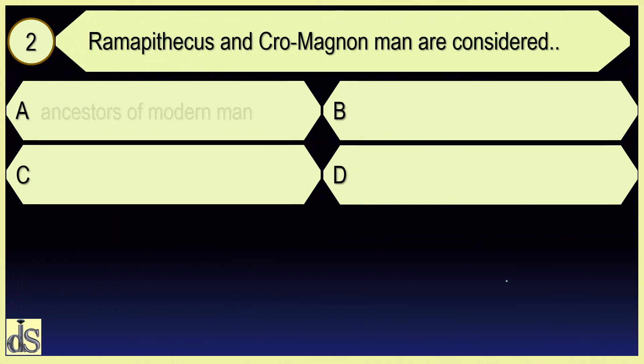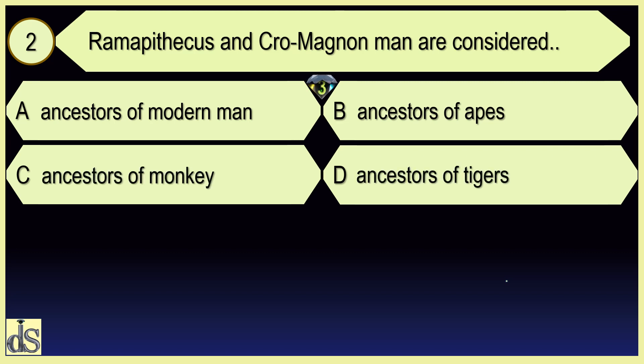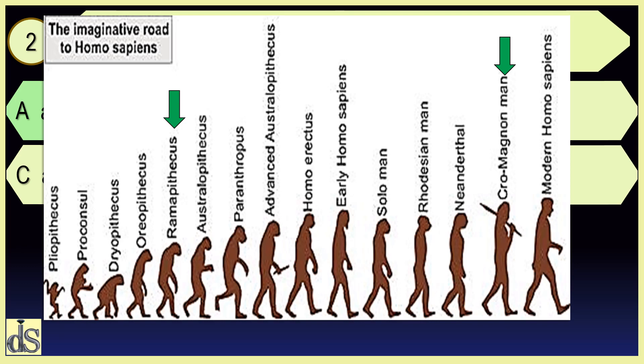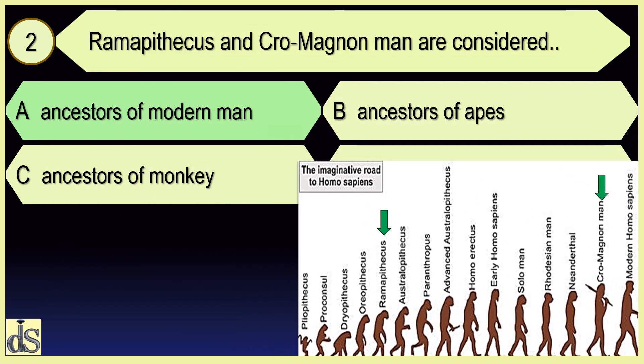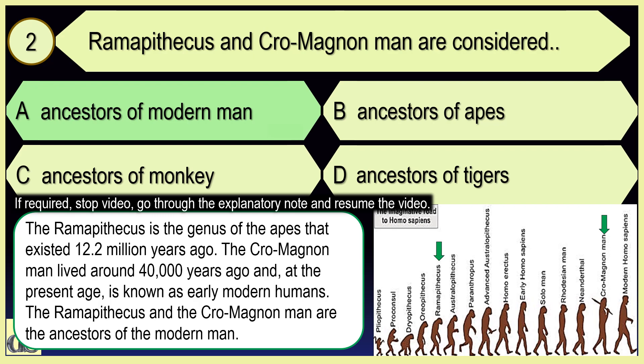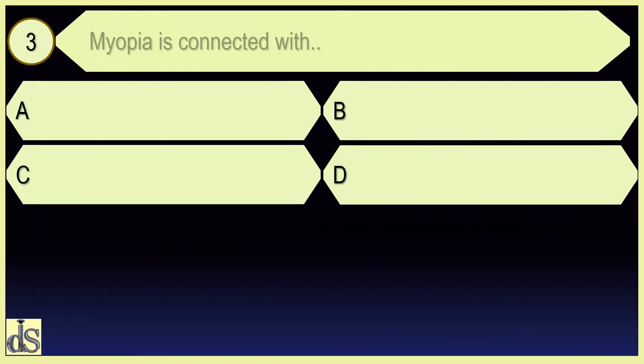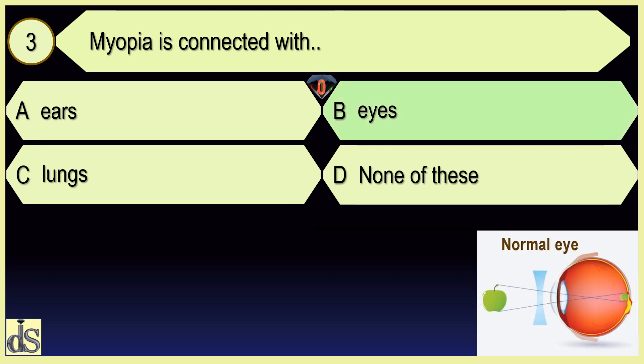Ramapithecus and Cro-Magnon Man are considered ancestors of modern man. Myopia is connected with eyes.